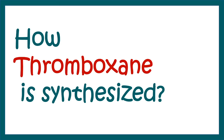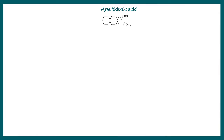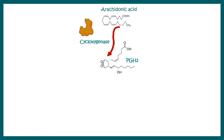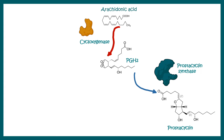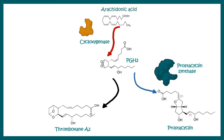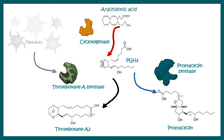Thromboxane is synthesized in the platelets. On the platelet membrane there is phospholipase, which generates arachidonic acid. Arachidonic acid is then converted to prostaglandin H2 with the help of cyclooxygenase. Prostaglandin H2 can then be converted to either prostacycline or thromboxane A2, with the help of thromboxane A synthase. Prostaglandin H2 formation is therefore a key node step.